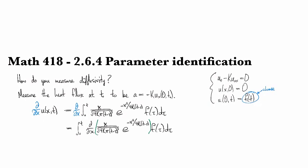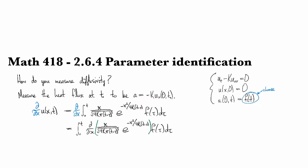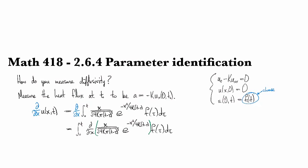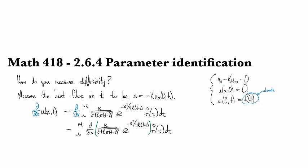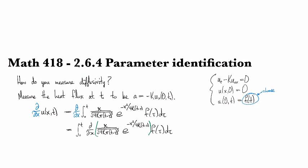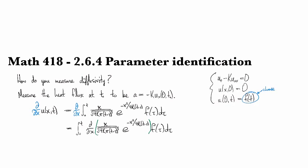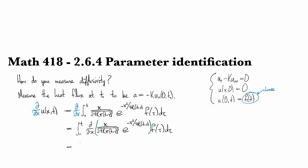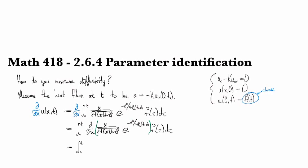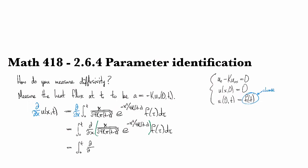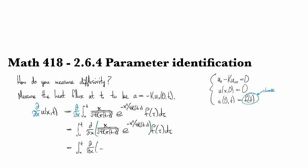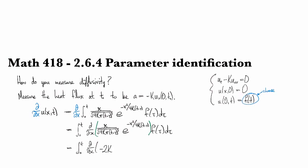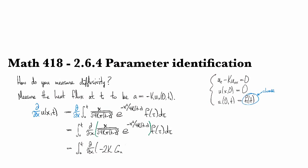So we need to do something a little bit more sneaky. So what we do instead is we notice that this thing inside the green parentheses here, that is actually the derivative of the heat kernel, mostly. It's actually minus 2k times the derivative of the heat kernel.